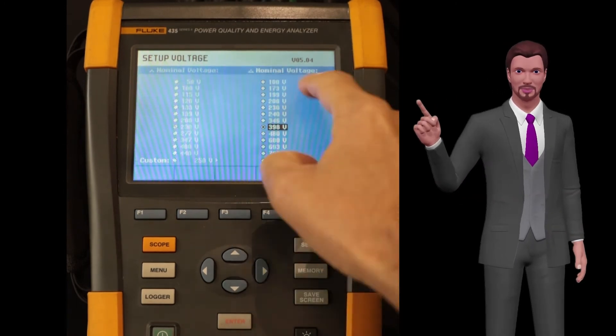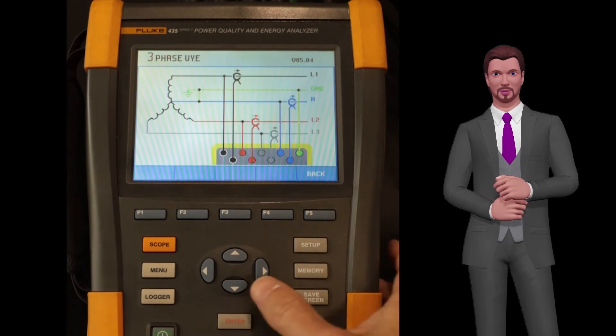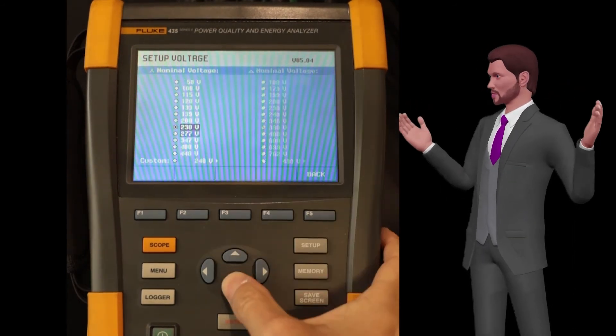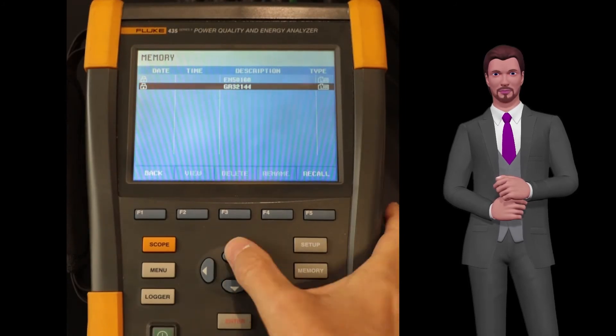Verify the type of system where you are going to measure, the nominal voltage and frequency, the correct selection and configuration of the probes and the electric quality standard. And although it seems silly, do not forget to verify that the date and time are correct.